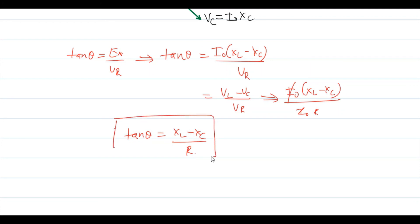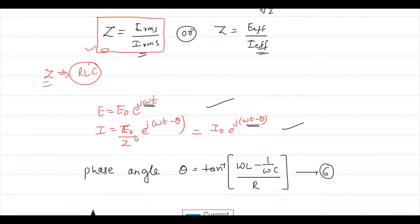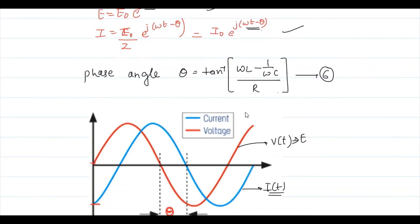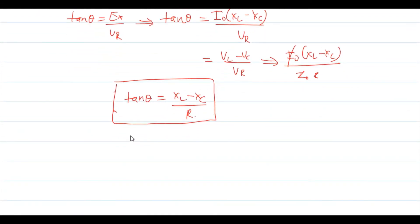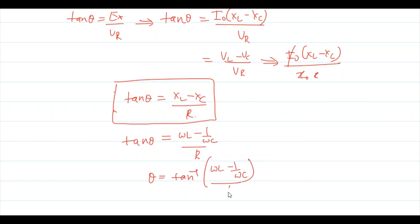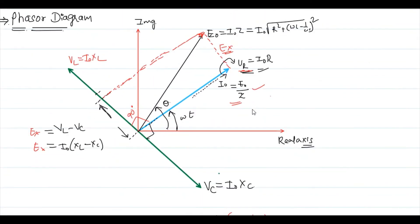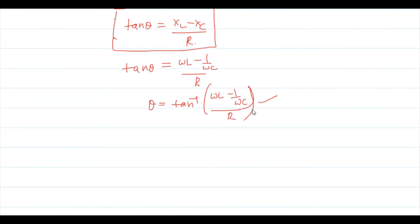Since X_L = ωL and X_C = 1/ωC, tan θ = (ωL − 1/ωC) / R, giving θ = tan⁻¹[(ωL − 1/ωC) / R]. This confirms the same phase difference obtained from the mathematical treatment. Both methods — mathematical derivation and phasor diagram — give the same result for the phase difference between current and EMF in the LCR series circuit.